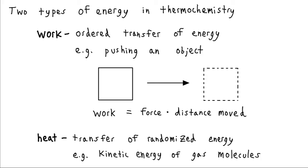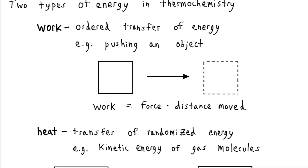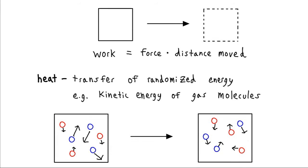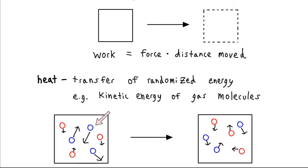Our other form of energy is heat. Unlike work, this is the transfer of randomized energy. We can't draw an arrow and say that this is the direction that all of our units of energy are moving. An example of this would be the kinetic energy of gas molecules. If we have one gas with lots of kinetic energy — a hot gas — and another gas with very little kinetic energy — a cool gas —